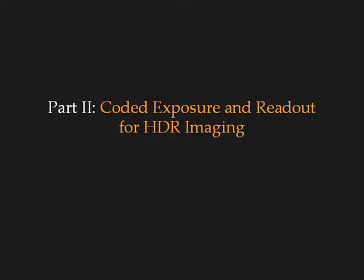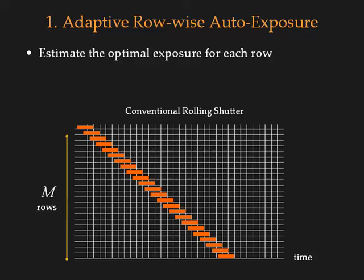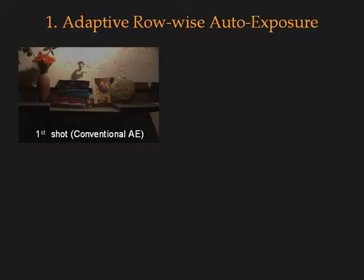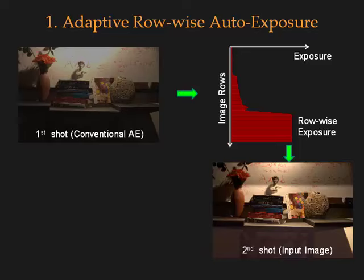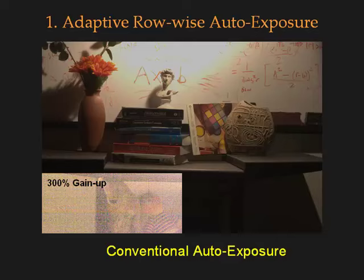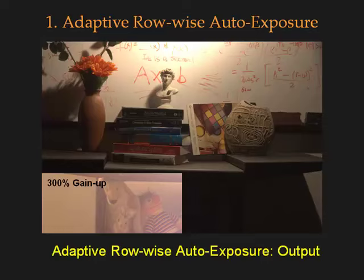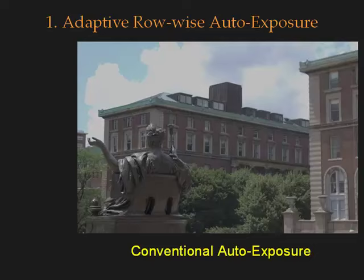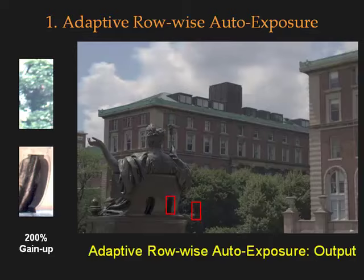In the second part, we show that if both the exposure and the readout are controllable for each row, they can be used to capture high dynamic range images with a single shot. Our first application is adaptive row-wise auto exposure. It finds optimal exposures for each row and thus it is more flexible than existing auto exposure methods. From the first shot, which is often an image taken with conventional auto exposure, our method estimates row-wise optimal exposures and takes the second shot, which is then normalized to generate the final output image. Here is a comparison: the image taken with conventional auto exposure versus the output of row-wise auto exposure with much less noise and saturation. Here is another example showing the row-wise exposure, input image, conventional auto exposure result with saturation of the sky and noise in dark regions, and the output of row-wise auto exposure.